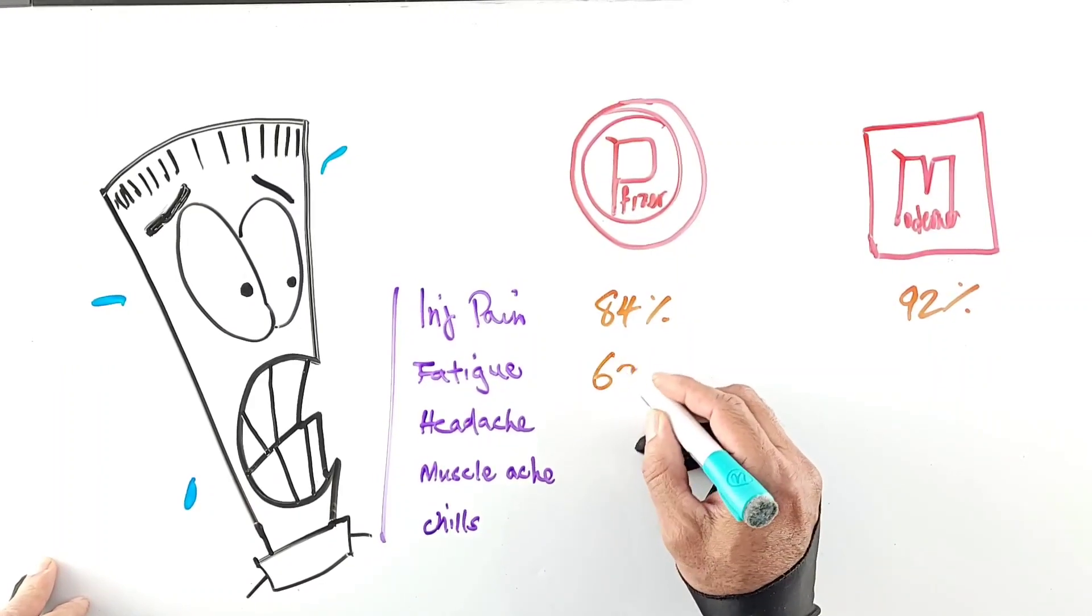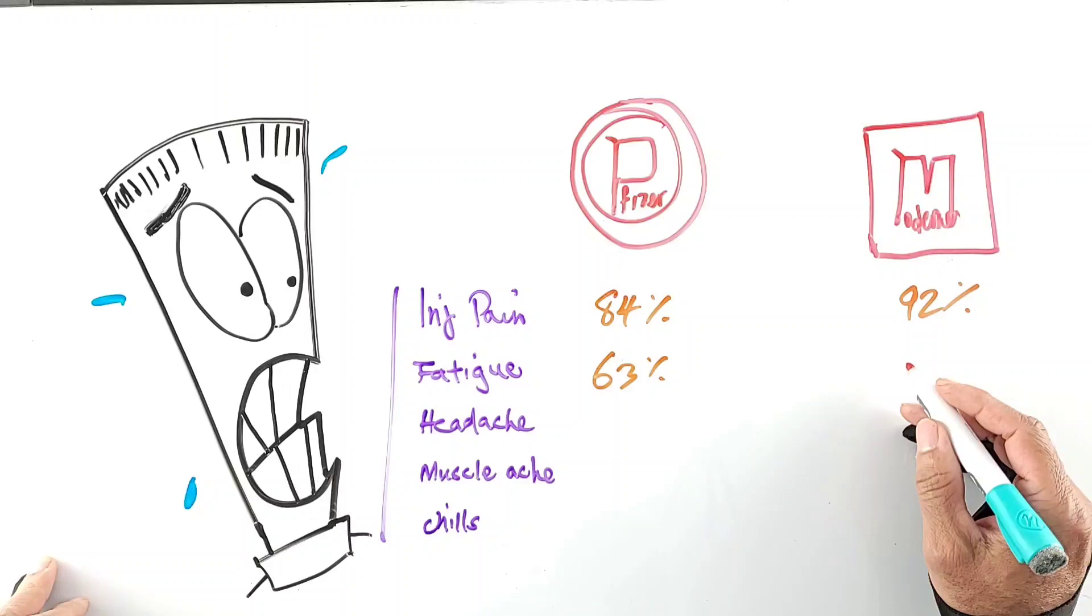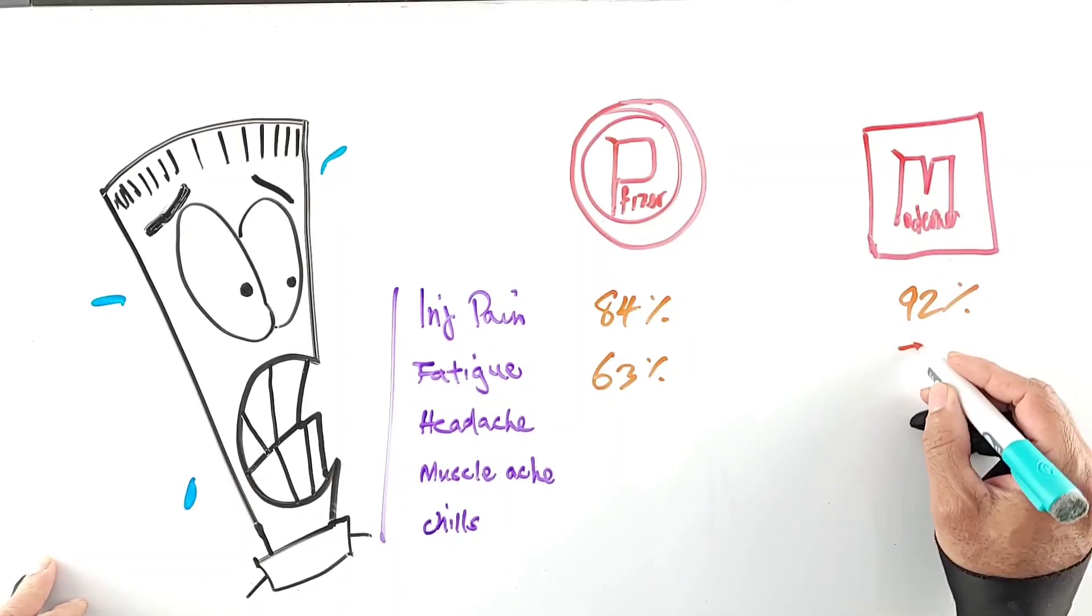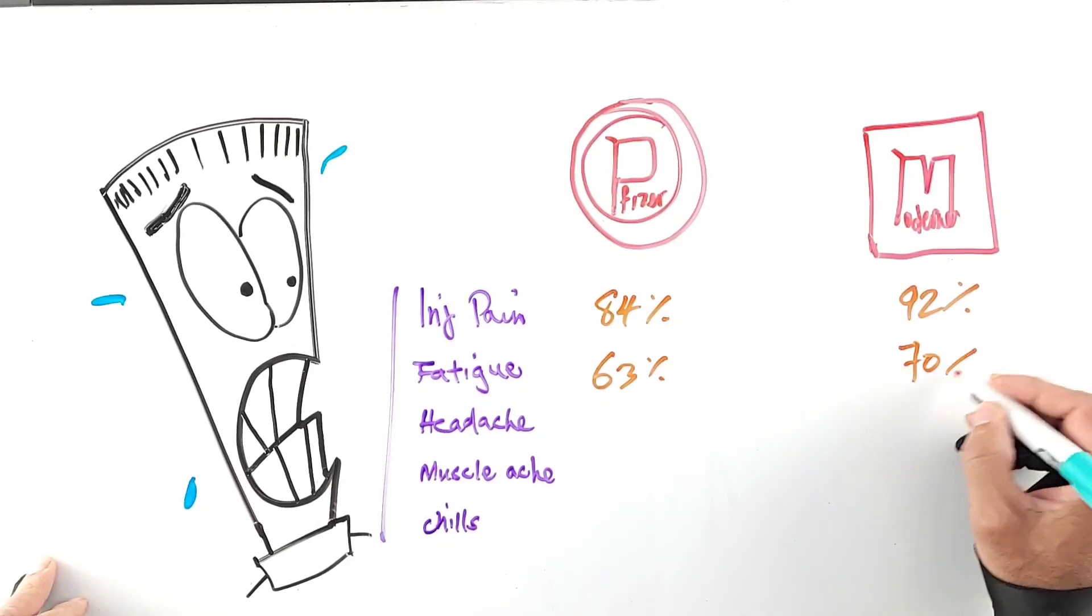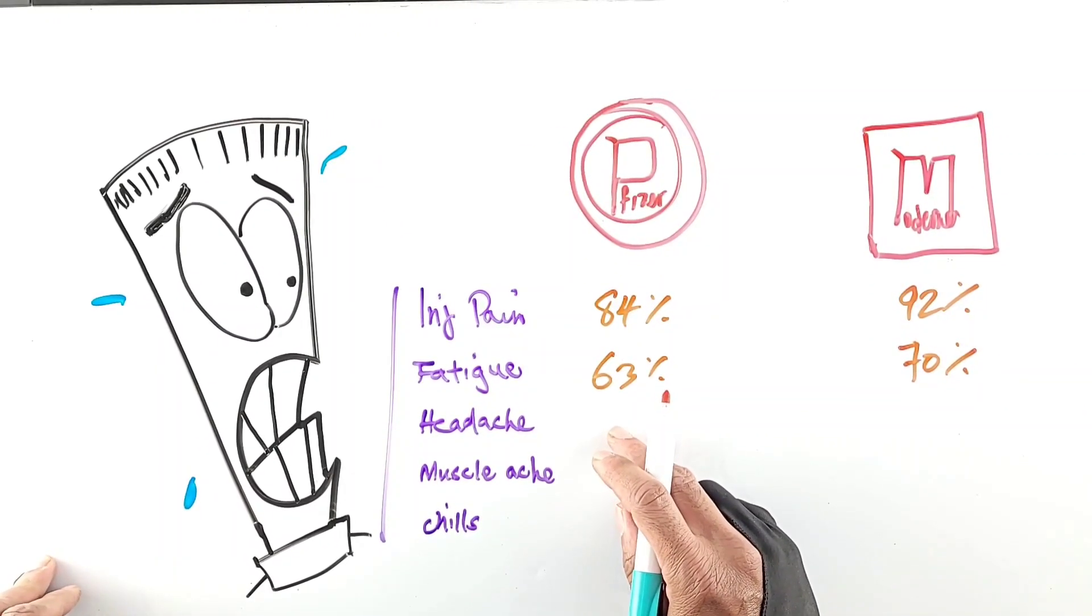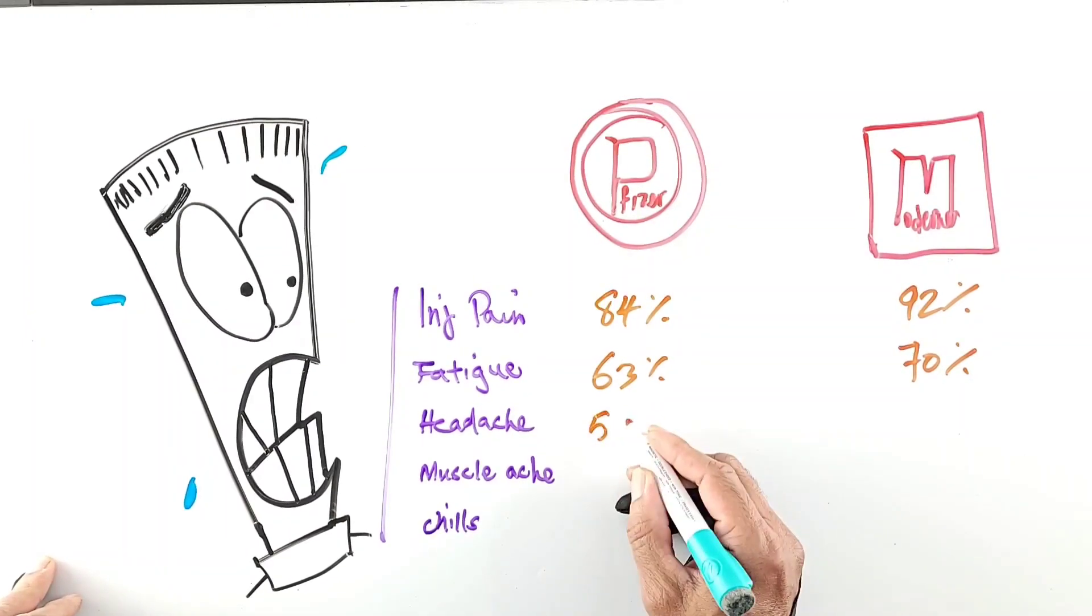and for Moderna the rate of that was 70 percent. For headaches we're looking at 55 percent in Pfizer